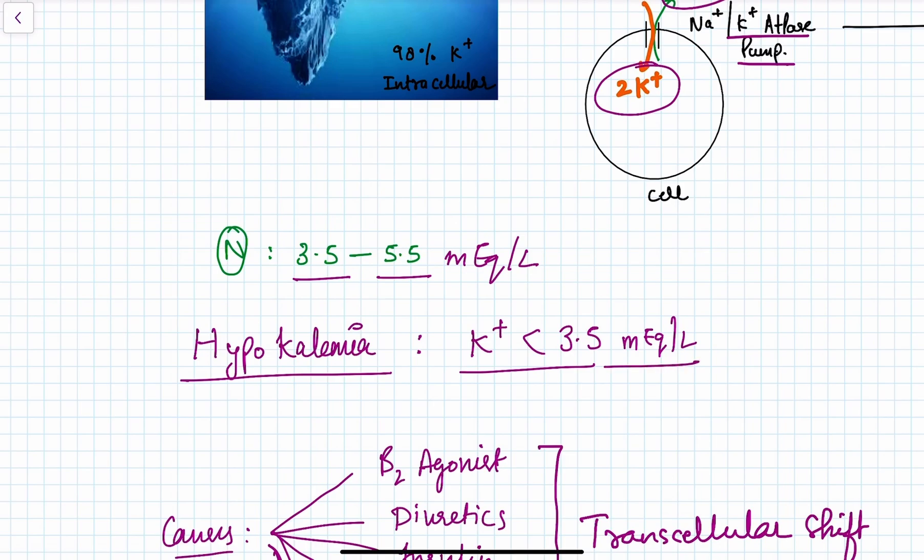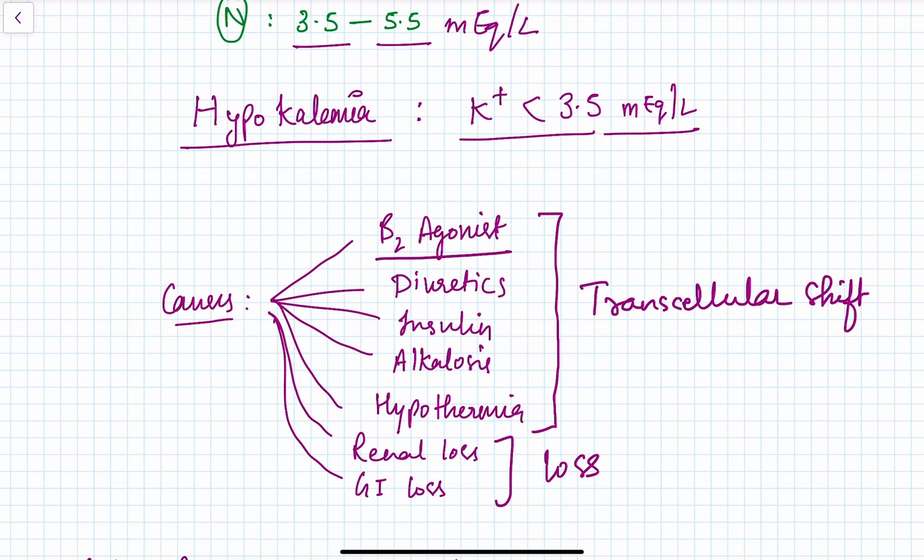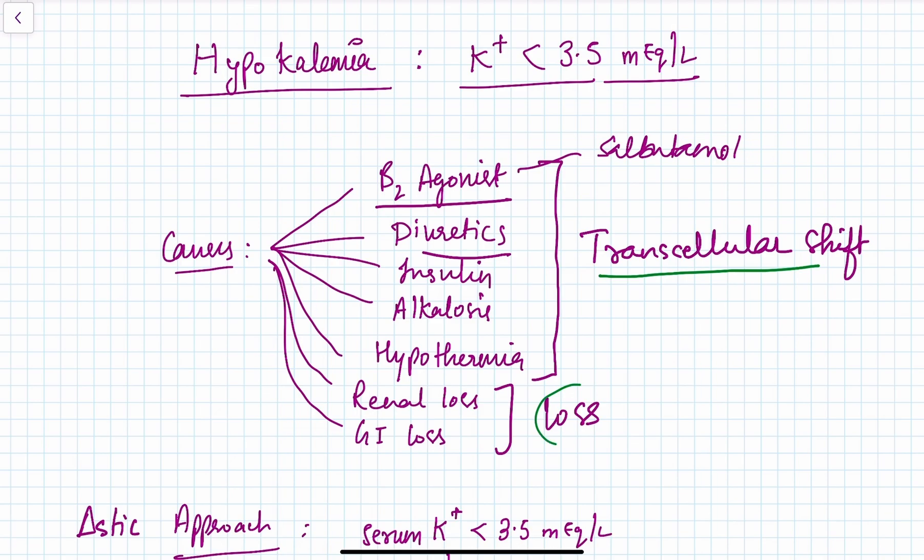The main causes of hypokalemia include beta-2 agonists like salbutamol and albuterol inhalation, diuretic use, insulin, alkalosis, and hypothermia. These cause transcellular shift. Other causes include renal loss, extra-renal loss, and GI loss. Among these, alkalosis is the main concern.